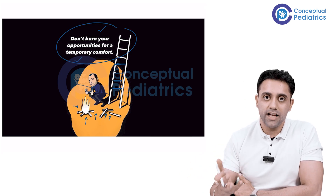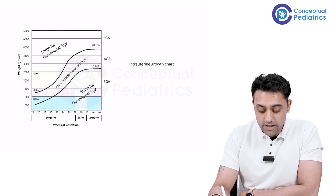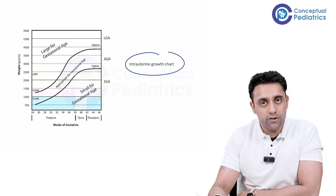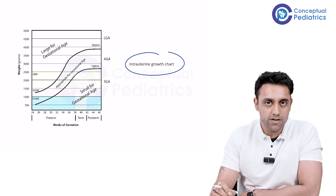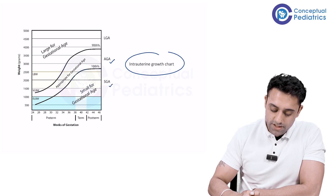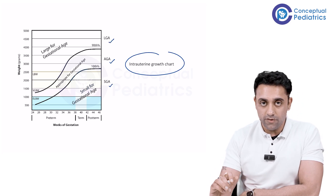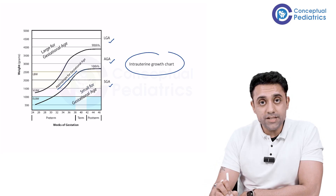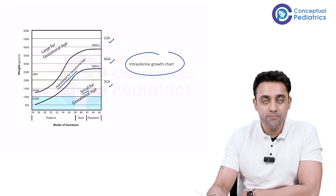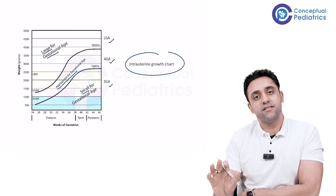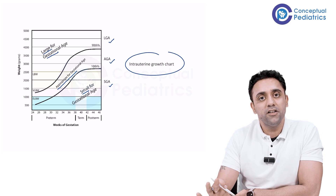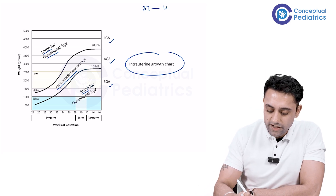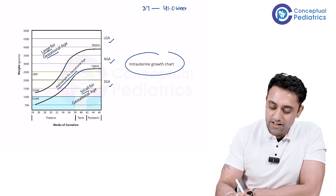Now we're going to talk about the intrauterine growth chart. There is something known as the intrauterine growth chart where they ask you three questions: what is AGA, what is SGA, and what is LGA? AGA is appropriate for gestational age, SGA is small for gestational age, and LGA is large for gestational age.